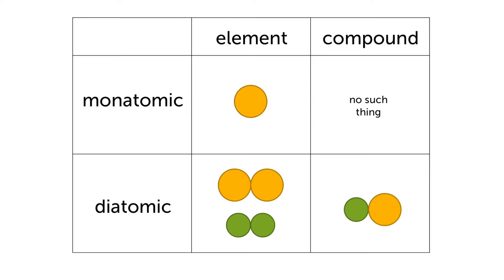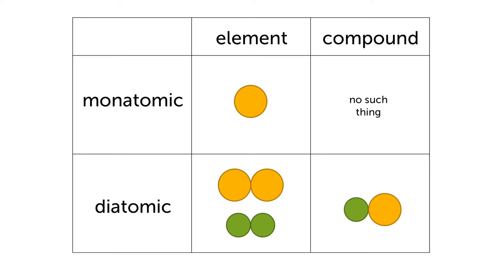We can summarize what we have learnt so far in a table. An element is only made up of one kind of atom. When it's a single atom by itself we call it monoatomic, and when two atoms are joined together we call it diatomic. There is no such thing as a monoatomic compound because a compound requires at least two different atoms. But we can have a diatomic compound, meaning two different atoms combined together.